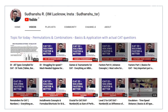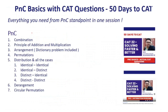Hey friends, this is Sudhanshu and I am back with the 90 days to CAT series. A very happy Diwali to all of you. Let's talk about something very important for the upcoming CAT exam: permutations and combinations. In this video we'll cover everything required for PNC — combination, principle of addition and multiplication, arrangement, dictionary problems, permutations, distributions (identical to identical, identical to distinct, distinct to identical, distinct to distinct), derangement, and circular permutation. We've also done a separate video on PNC distribution on YouTube.